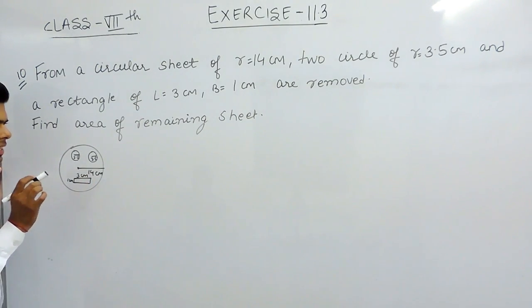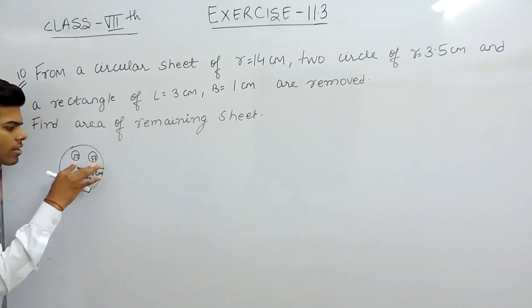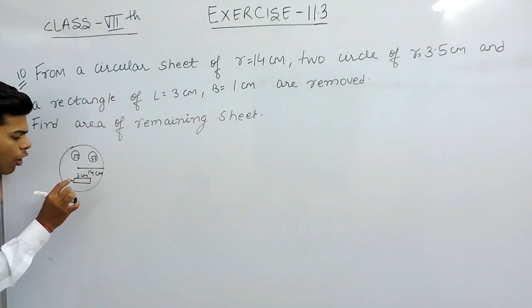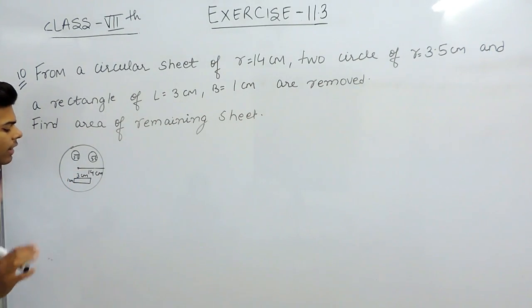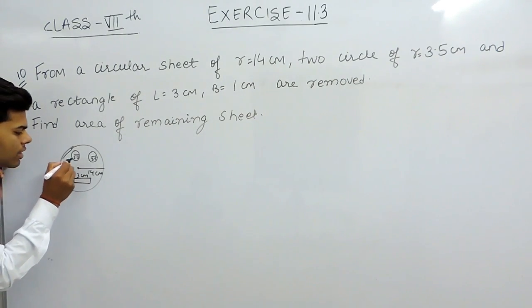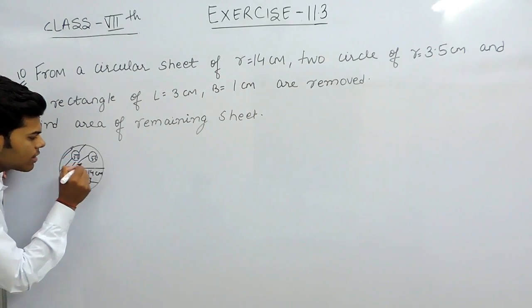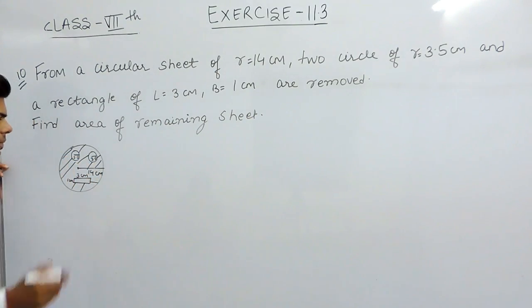Then from this circle, two circles of radii 3.5 cm are cut out and a rectangle of length 3 cm and breadth 1 cm is cut out. We have to find the area of remaining portion, excluding these figures.